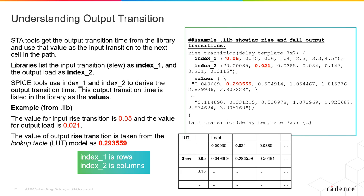You look up the output transition value for that corresponding slew and corresponding load. This example shows the output transition is plotted between the input transition and the output load.